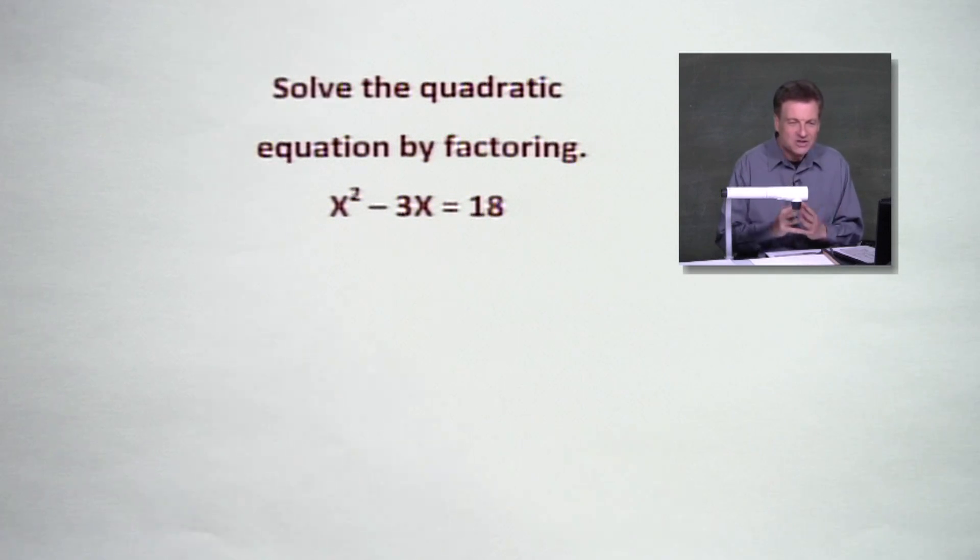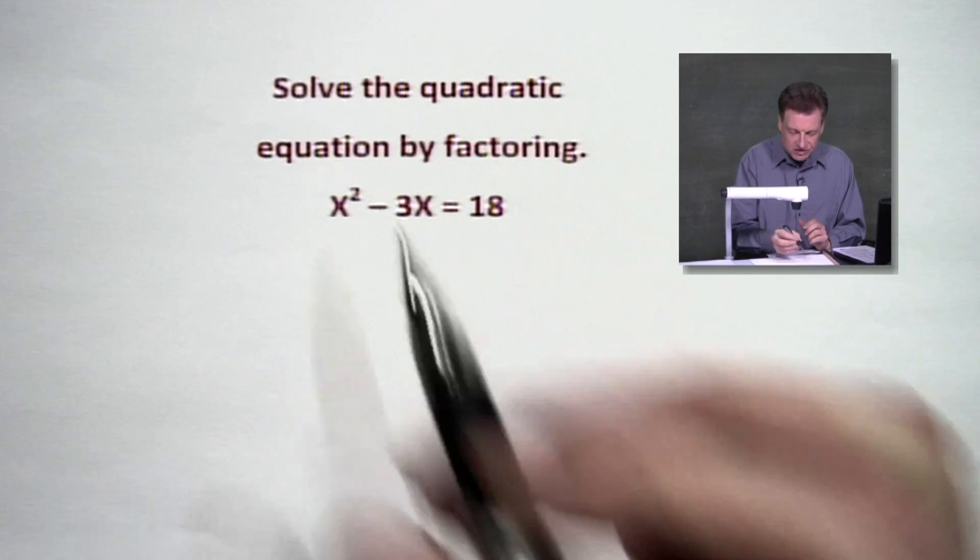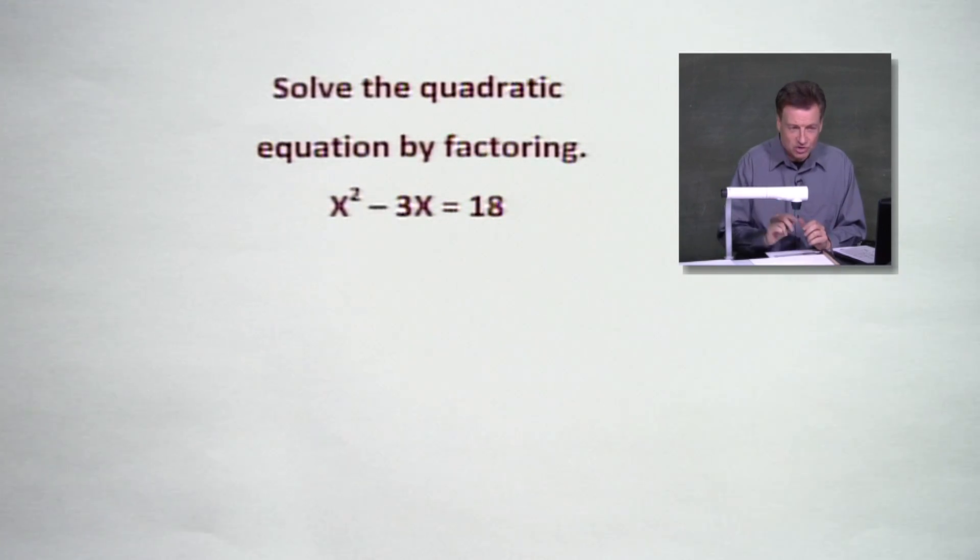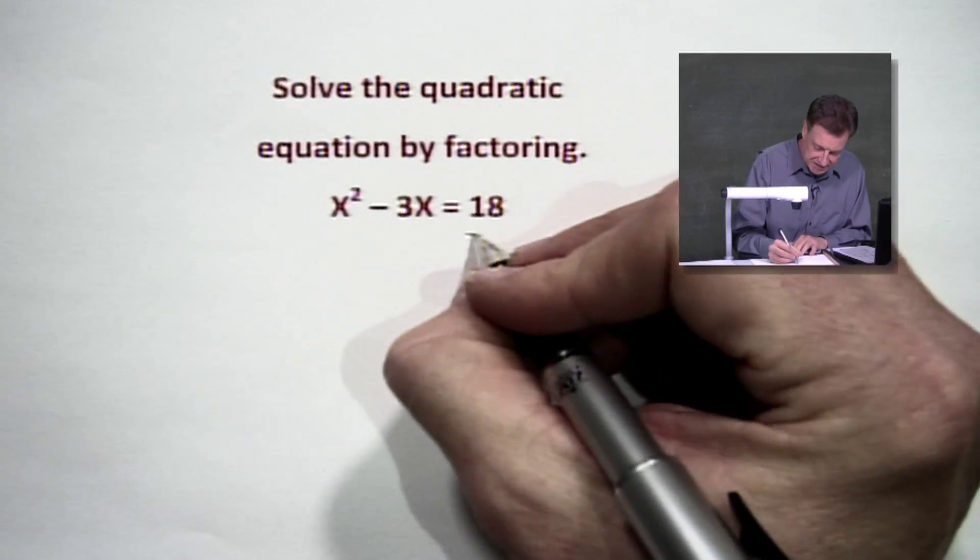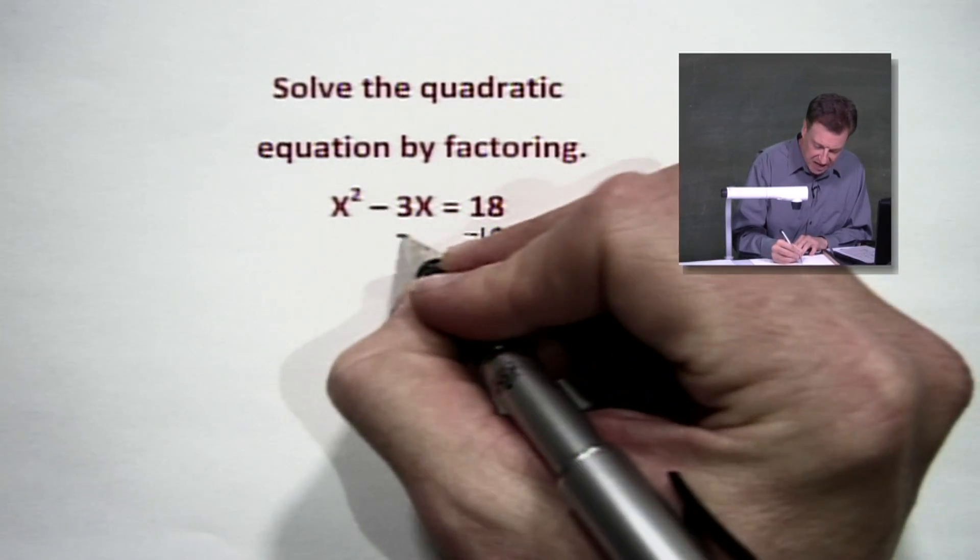When we factor, we've got to set it equal to zero because that's the whole idea. To solve it is find the zeros, find the roots, of this quadratic equation. Notice there's x squared which tells me there are two solutions lurking out there. The first thing we want to do is get it equal to zero. So we'll subtract 18 from both sides.